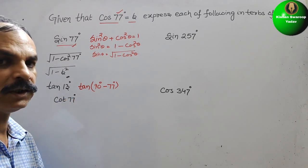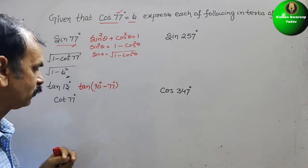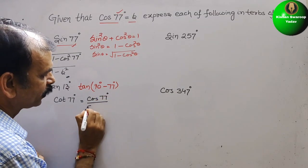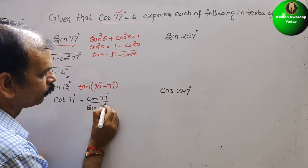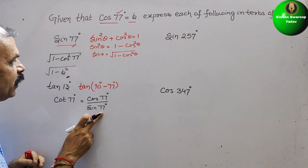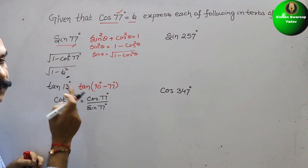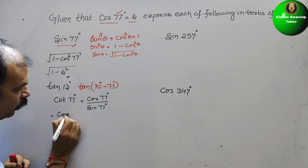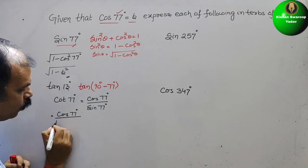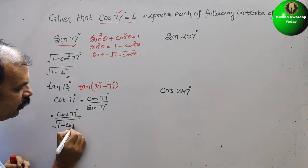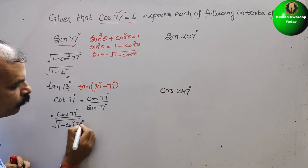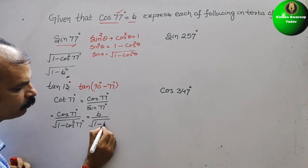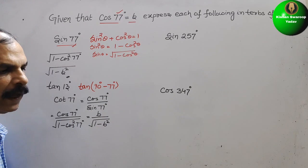Now cot = cos/sin, so cot 77° = cos 77° / sin 77°. We already know sin 77° = √(1 − cos² 77°). So this becomes cos 77° / √(1 − cos² 77°), and substituting cos 77° = B, we get B / √(1 − B²).